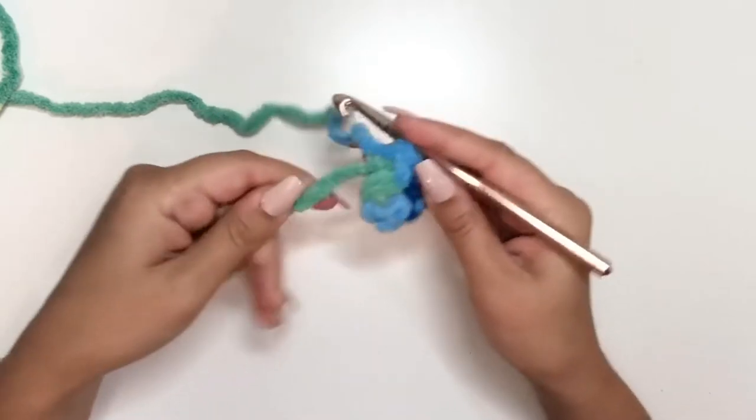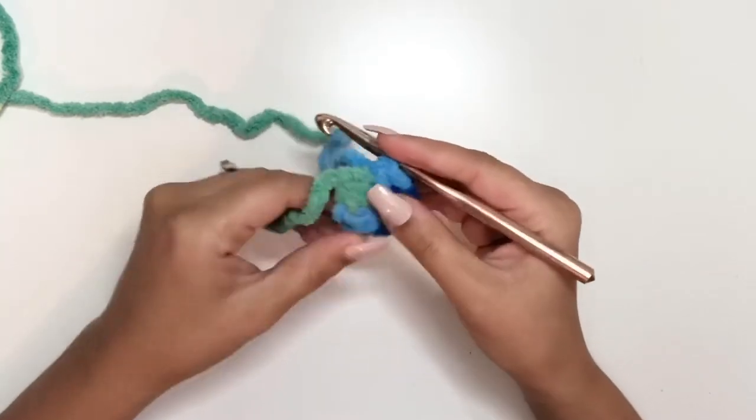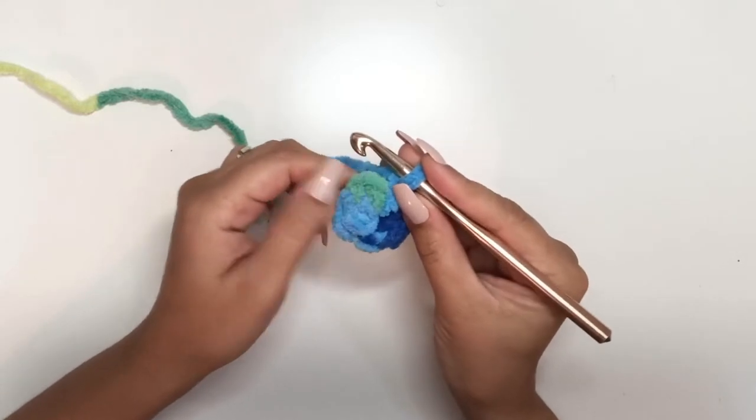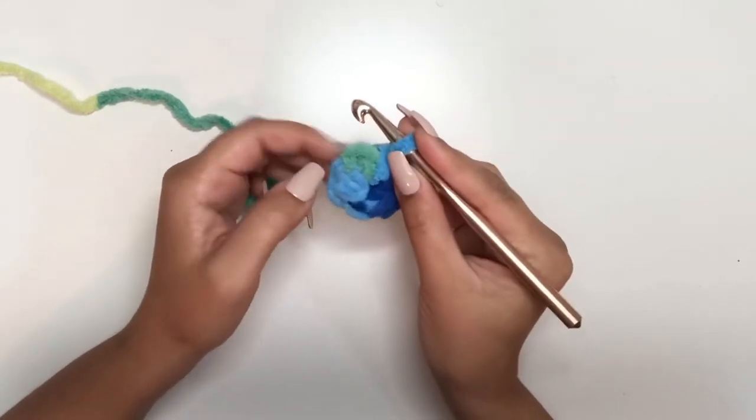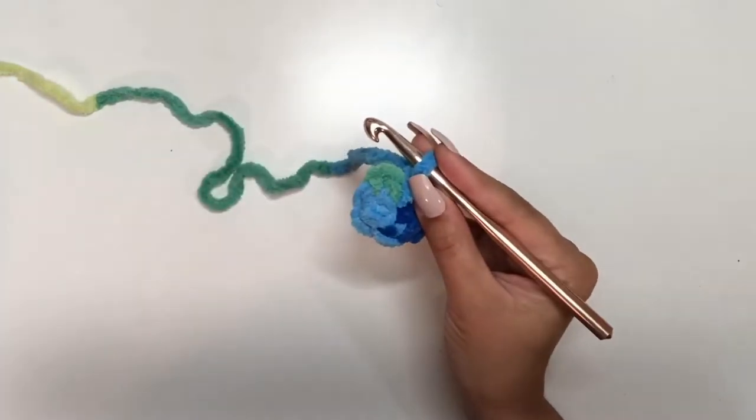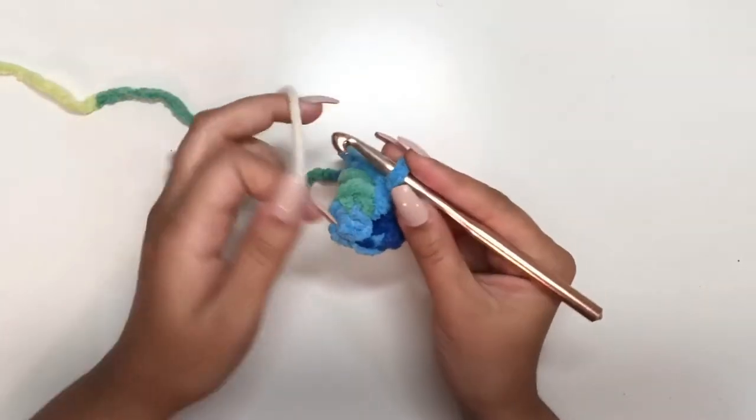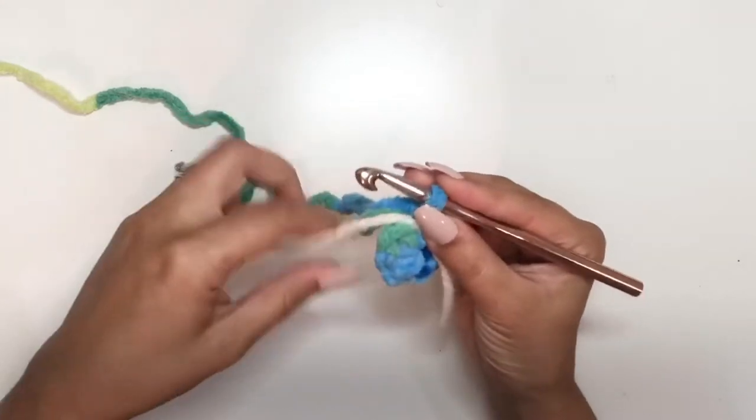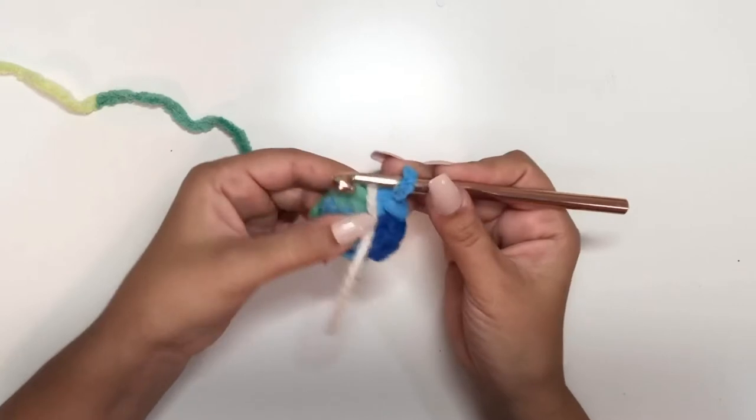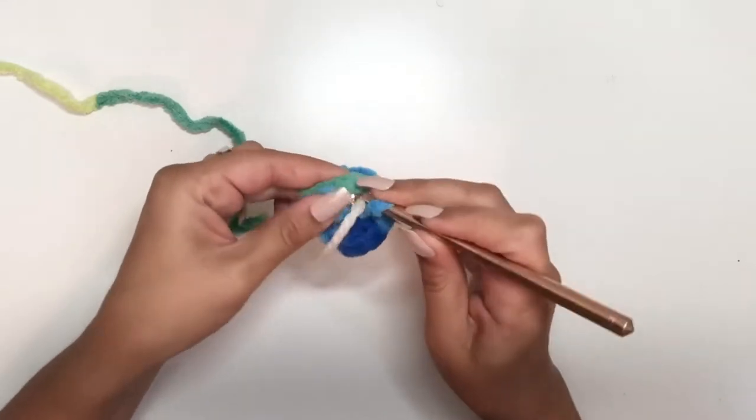For the second row we're going to continue with single crochets. We're not going to join with a slip stitch, and we're going to work two single crochets into each stitch. You'll need to mark the beginning of your row. I just use this strand of yarn, place it right on top right before I start my next row, and we'll do two single crochets into each stitch.